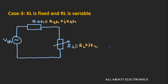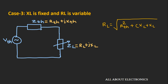In the third case, the reactive part XL is fixed and the resistive part RL is variable. For maximum power transfer, the value of RL should equal √(Rth² + (Xth + XL)²). This value of RL ensures that maximum power will get transferred across the load.